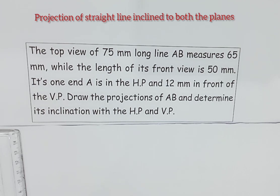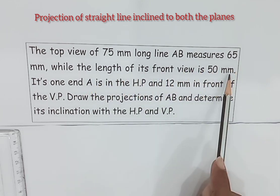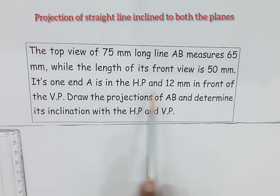Now we will discuss another problem under the concept of line inclined to both the planes. What is the given problem? The top view of a 75 mm long line AB measures 65 mm while the length of its front view is 50 mm. Its one end A is in the HP and 12 mm in front of the VP. Draw the projections of AB and determine its inclination with HP and VP.